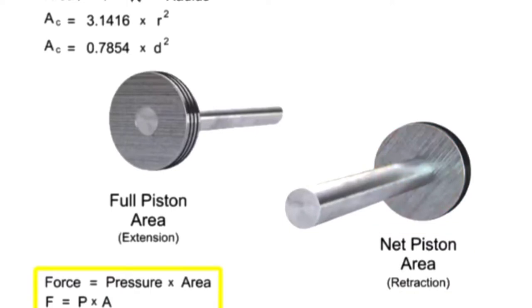The force equals pressure times area equation can be used to determine the force on either side of the piston.